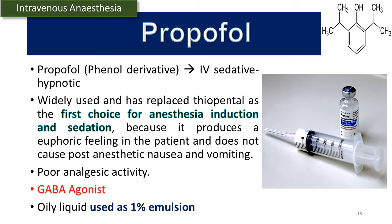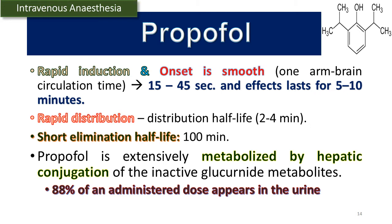Propofol is a non-barbiturate fast inducer classified as a phenol derivative IV sedative-hypnotic. It is widely used and has replaced thiopental as the first choice for anesthesia induction and sedation because it produces a euphoric feeling and does not cause post-anesthetic nausea and vomiting. It has poor analgesic activity and is a GABA receptor agonist. It is used as an oily liquid — a 1% emulsion. Propofol causes rapid induction with smooth onset within 15 to 45 seconds, and the effect lasts 5 to 10 minutes. Distribution half-life is 2 to 4 minutes, and elimination half-life is 100 minutes.